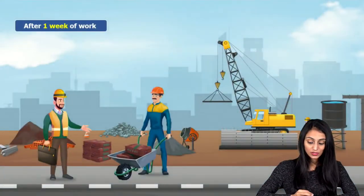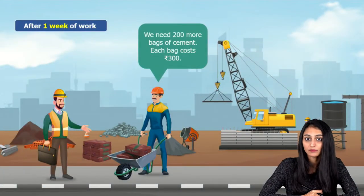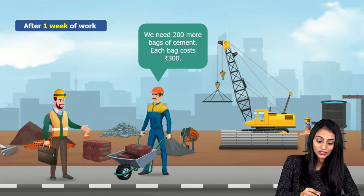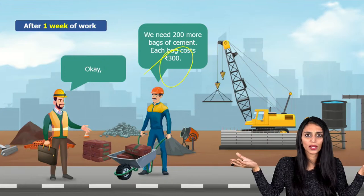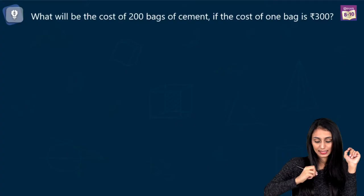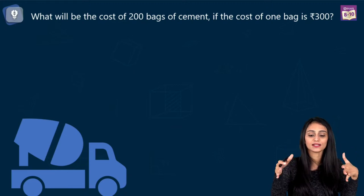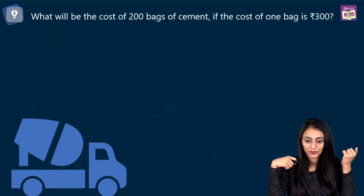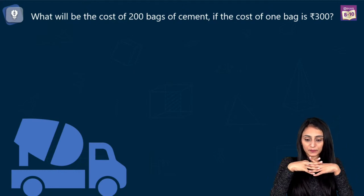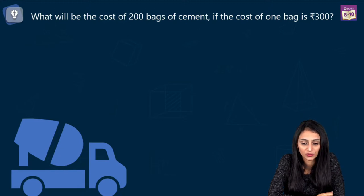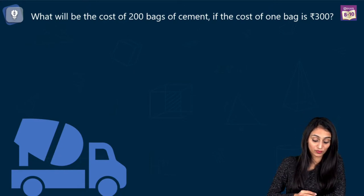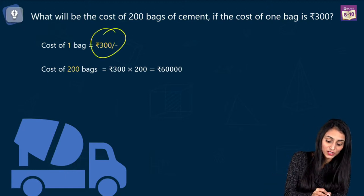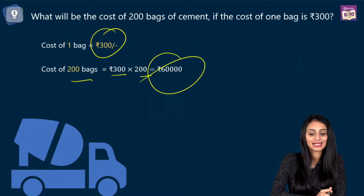One week has passed and after one week of work, Mukesh, the senior worker, has another demand. He says we need 200 more bags of cement, and the cost of each bag is again rupees 300. So what is the cost? If the number of bags are 200, the cost is going to be rupees 300 times 200, that's rupees 60,000.